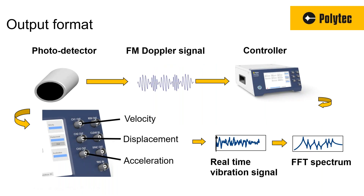What do we get as output? We've always kept the output generic. You could take analog velocity, displacement, or acceleration and take it to your data acquisition system — a simple oscilloscope, FFT analyzer, LabVIEW, whatever you're using. With the new generation of vibrometers, you can also tap into the digital data source directly using an ethernet cable. Basically you get this instantaneous velocity, displacement, or acceleration, and then you do whatever you want with it.